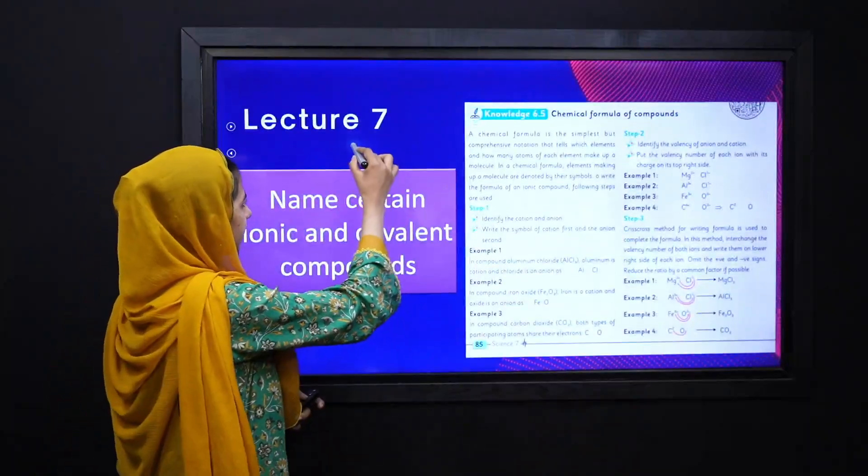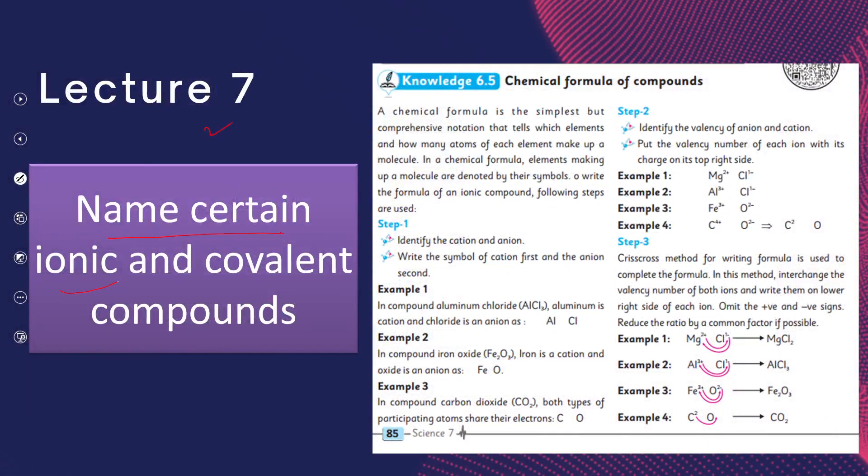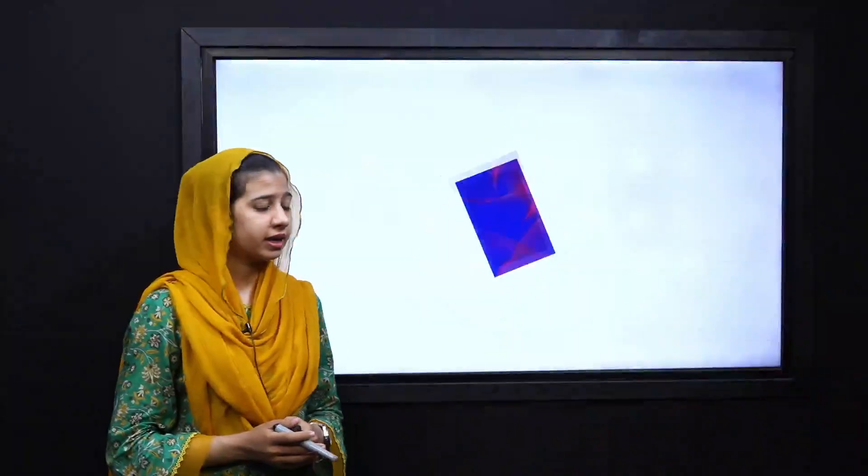In lecture 7, we will name certain ionic compounds. In our previous lectures, we discussed covalent bonds. In the same way, in this lecture we will discuss ionic compounds with the help of different examples, and we will learn their naming.